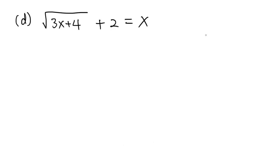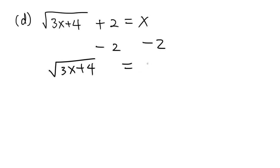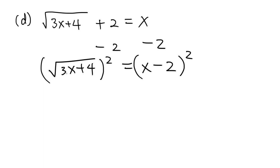Here we have the next example. In this example you can see there are two terms on the left-hand side. The first thing to do is to isolate the radical alone on the left-hand side. So we are going to subtract 2 from both sides of the equation and leave only the radical, square root of 3x plus 4, on the left. Then we have x minus 2 on the right.